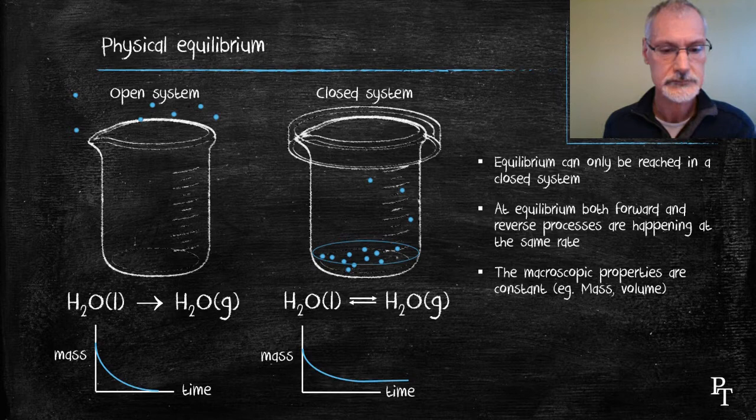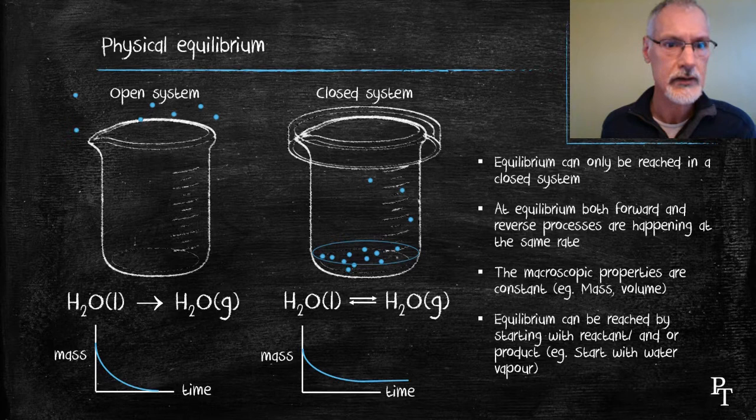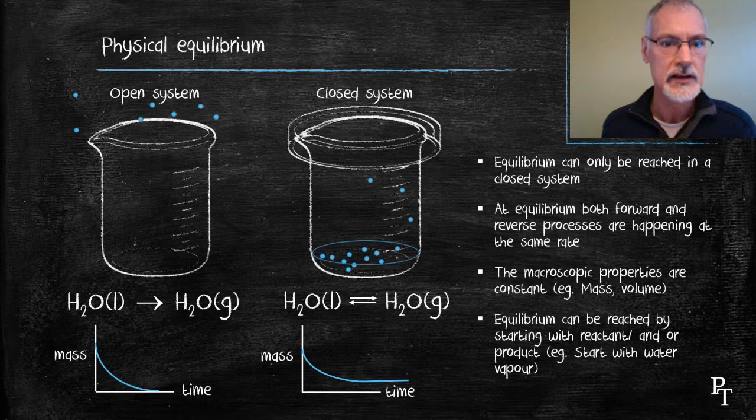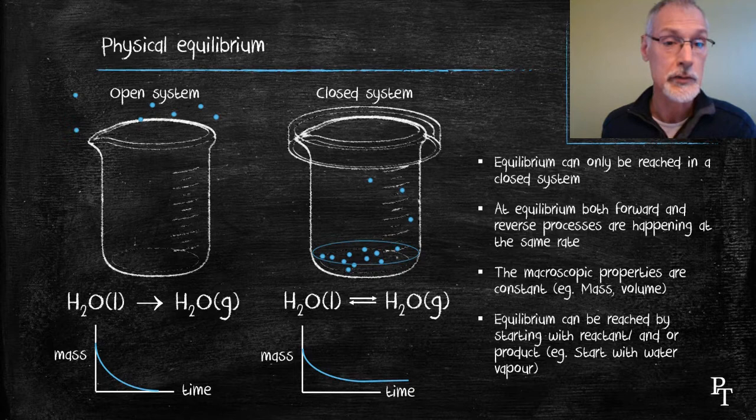And finally, equilibrium can be reached from either starting with products or reactants. What that means in this case is I could have also reached equilibrium by starting with steam or water vapor present in my beaker and eventually I would reach a balance between the liquid and the gaseous state. So it doesn't matter whether I start with reactant or with product or with some mixture of the two.